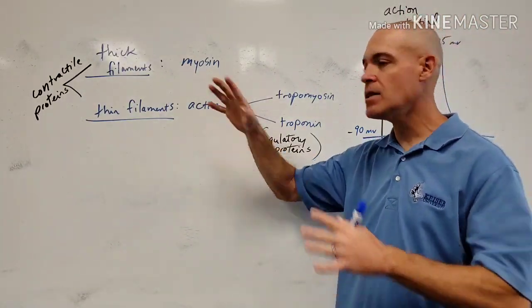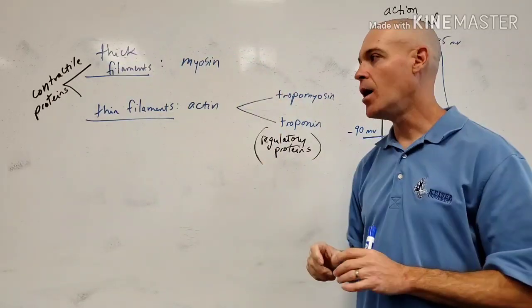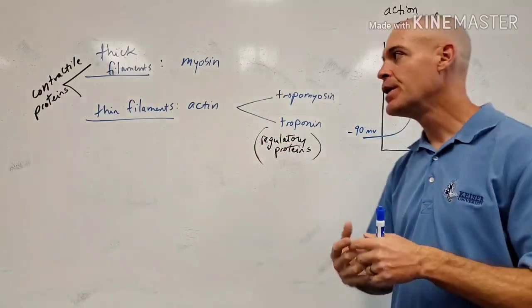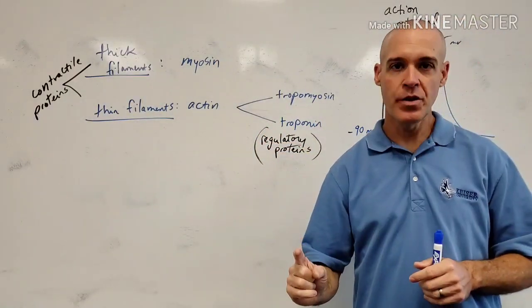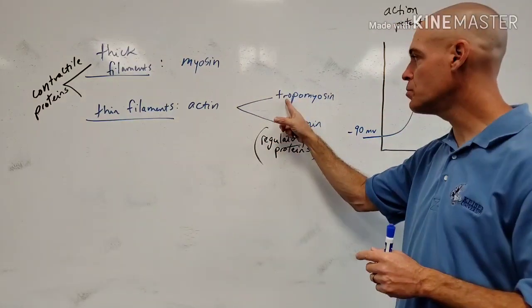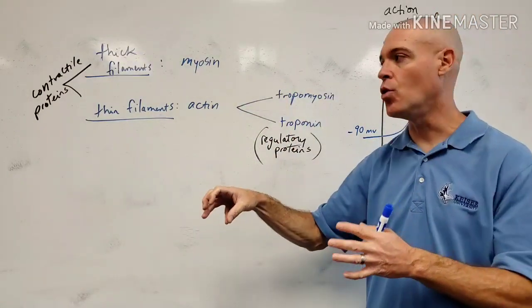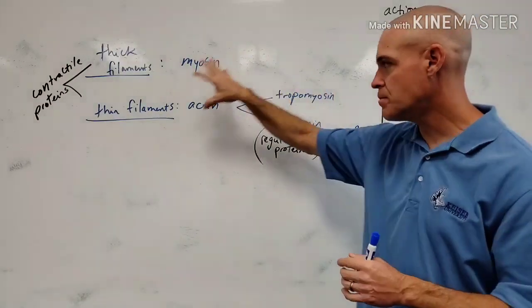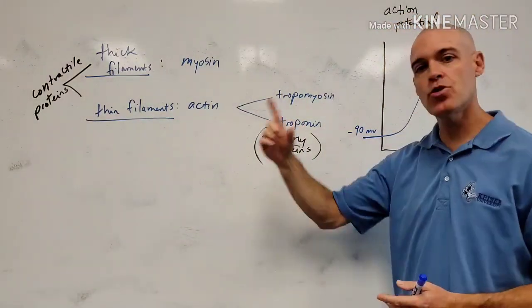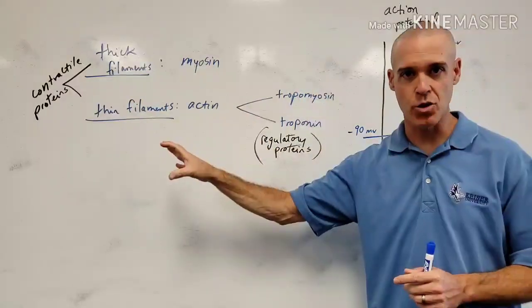Before I do that, I want you to realize that myosin really doesn't have anything special on it. It just has these heads, which will grip the actin whenever they start to slide closer together. The actin molecule, on the other hand, has two other molecules on it: tropomyosin and troponin. These are considered on the actin molecule. Many books would refer to them as part of the thin filament or thin filaments themselves. But they are not contractile proteins. What are they? They are regulatory proteins. They regulate contraction.